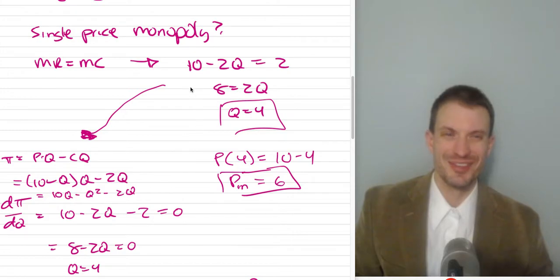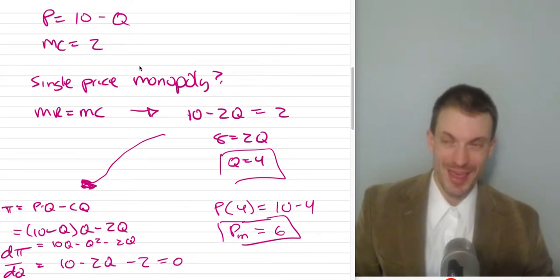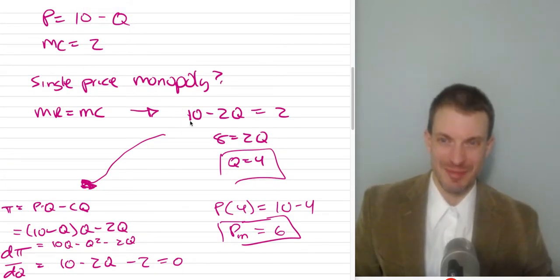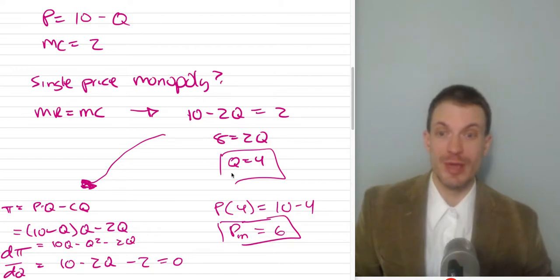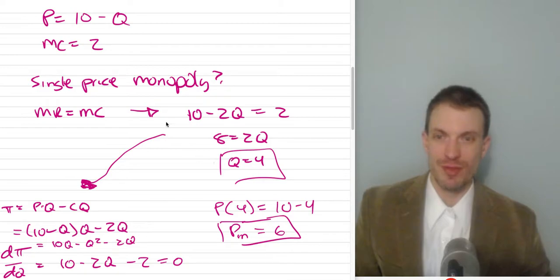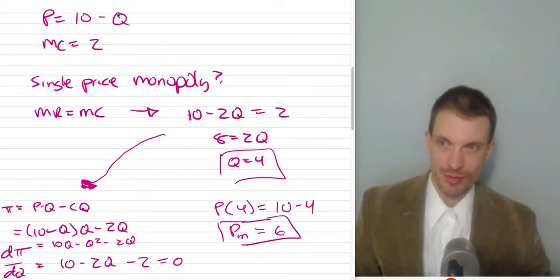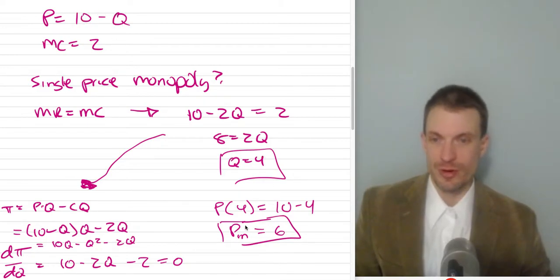We can simply set marginal revenue equal to marginal cost and find a quantity of 4. Either way, we have to find the associated price. Remember, prices come from demand curves. We evaluate the demand relationship at the quantity of 4, and clearly the price is going to be 6.